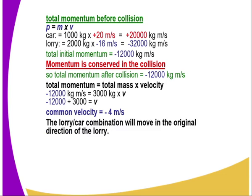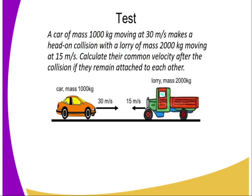So, the lorry and the car combination will move in the original direction of the lorry. Now, let's try to tackle the same question once again and see whether we can be able to answer appropriately by identifying which type of collision is this.